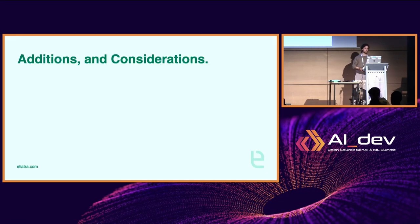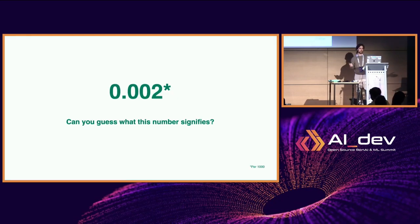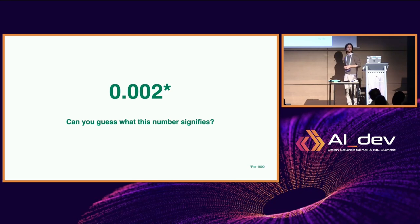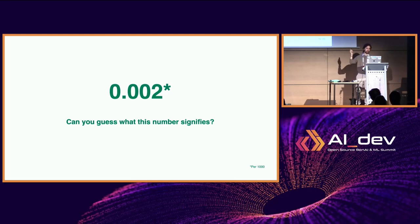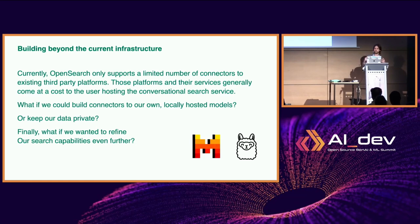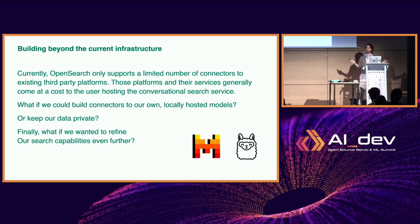Now for some additional considerations. OpenSearch currently supports a limited number of connectors to third-party platforms, and at scale you'll be paying OpenAI something like $0.002 per thousand tokens — which adds up quickly. But what if we could build connectors to our own locally hosted models, keep our data private from these LLMs, and refine our search capabilities further?